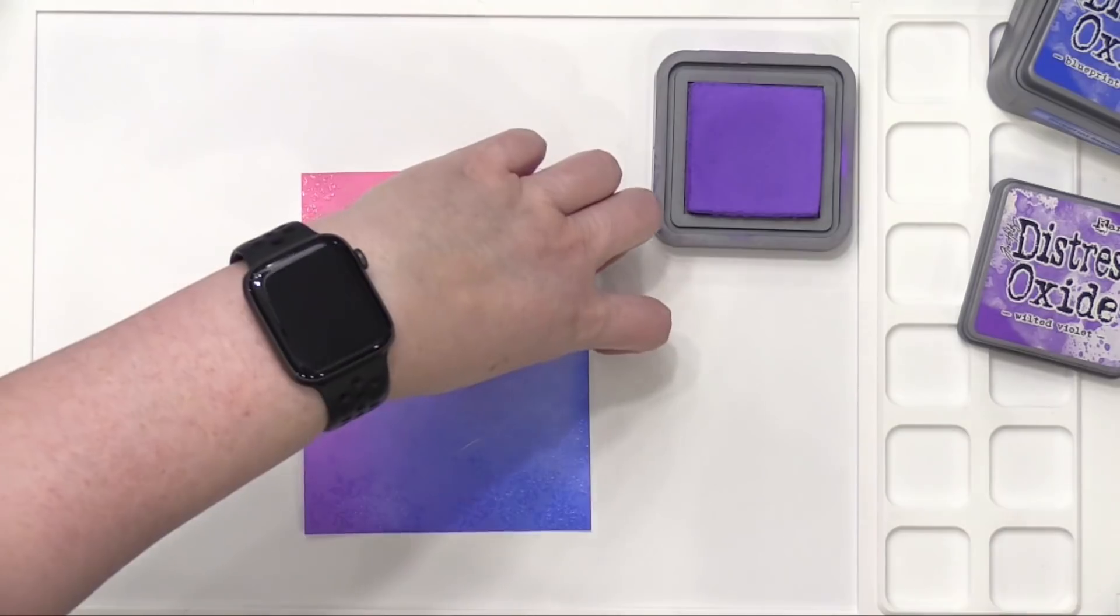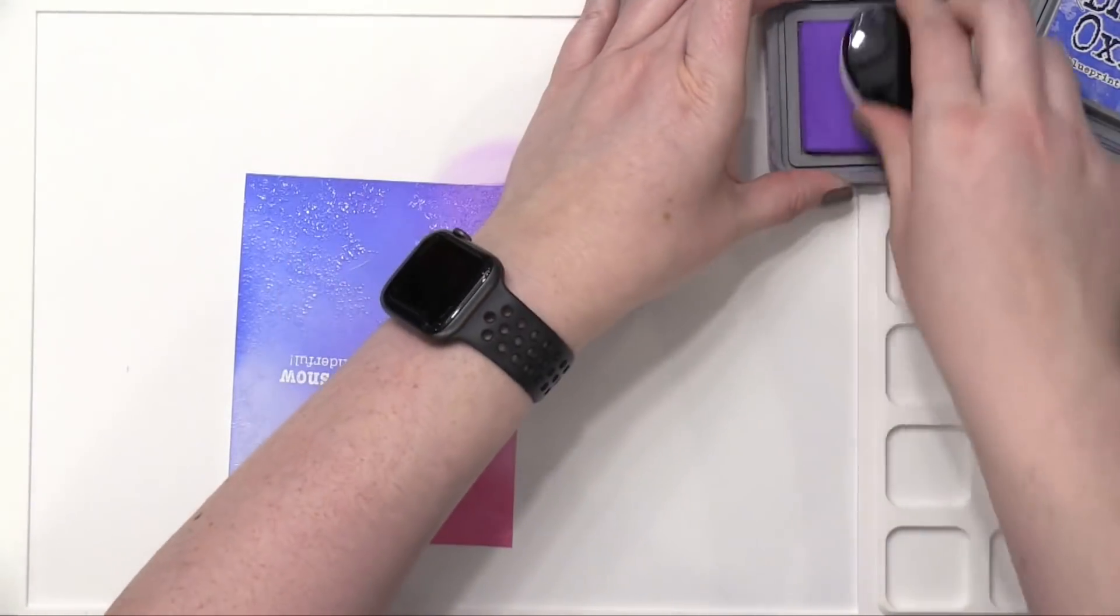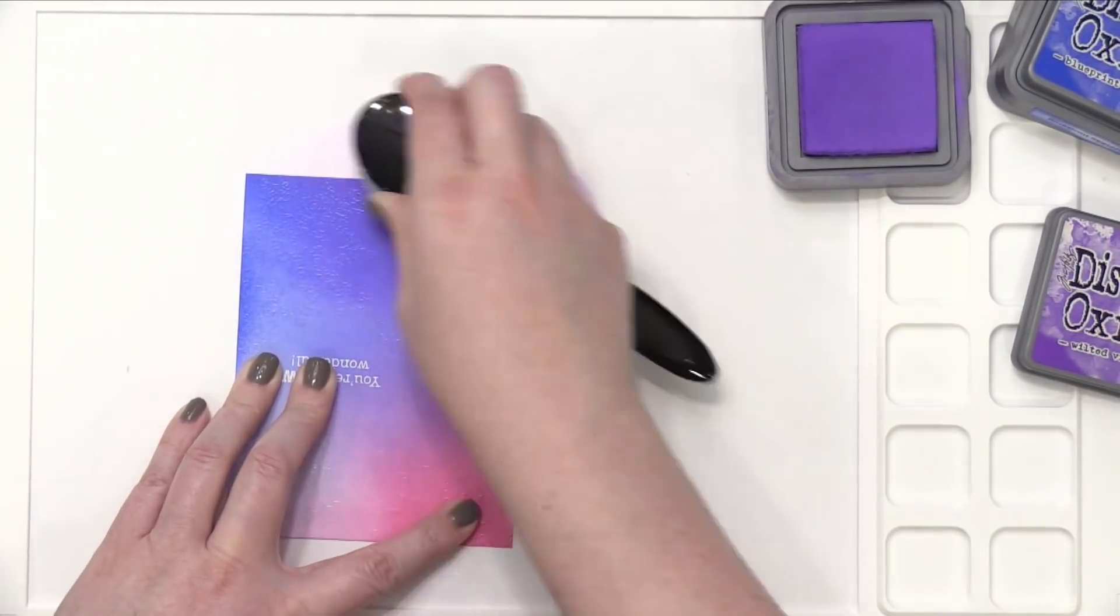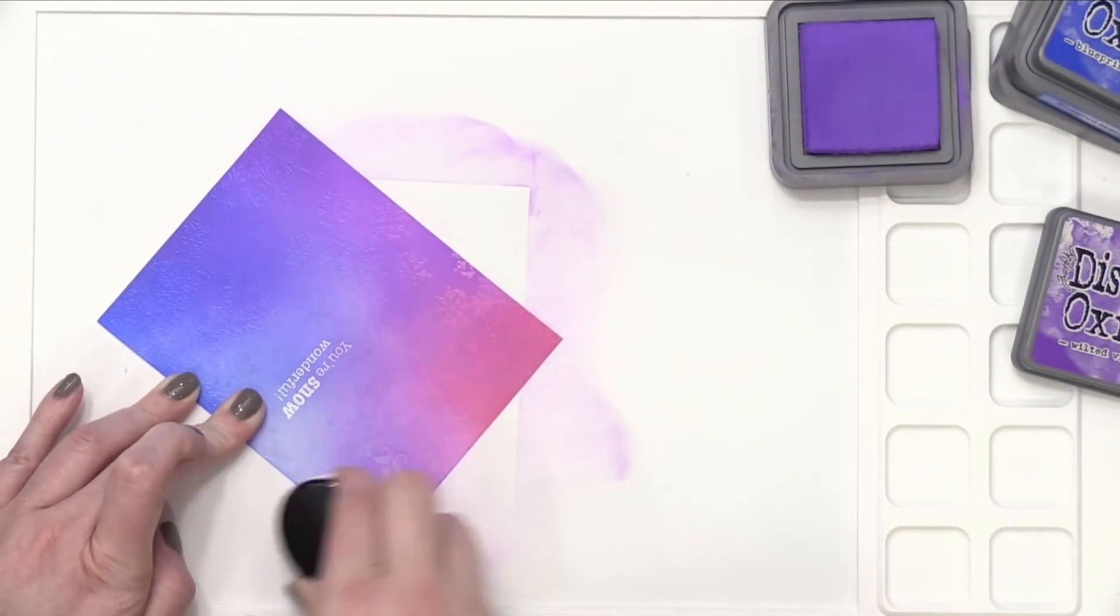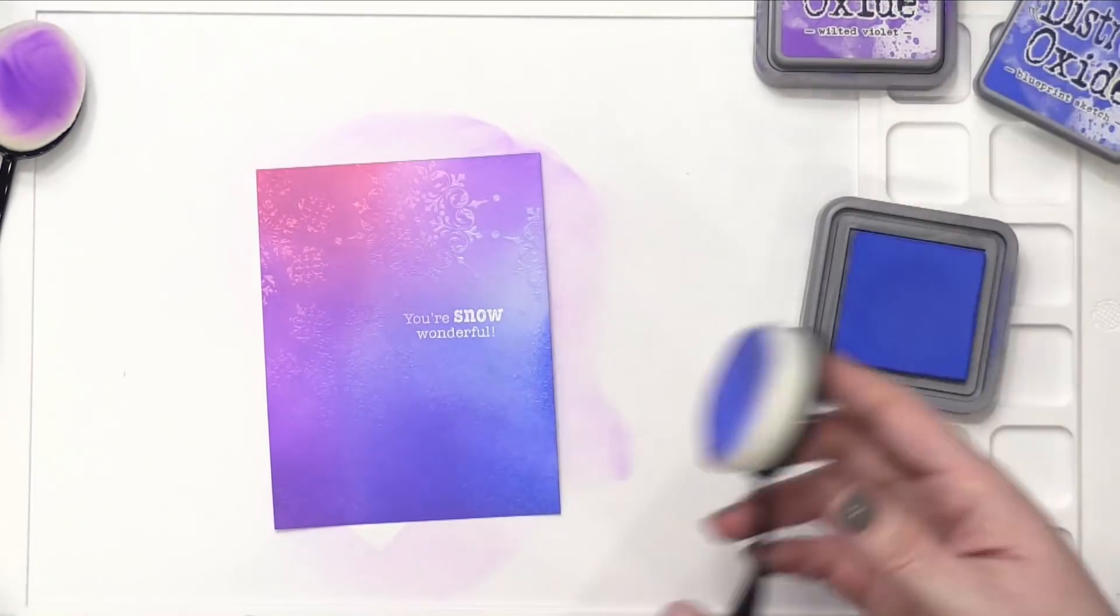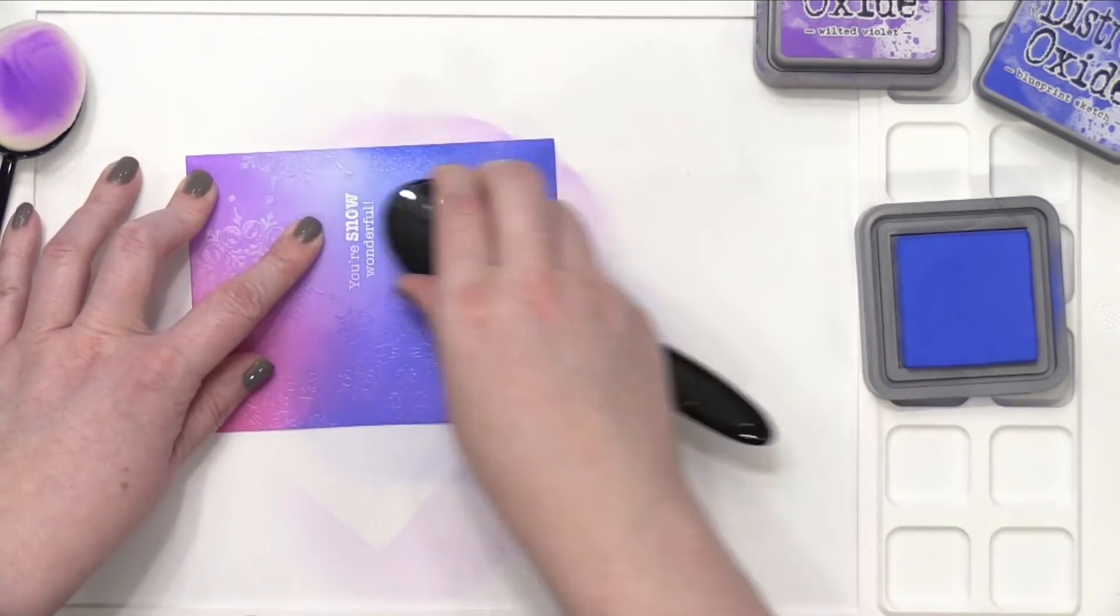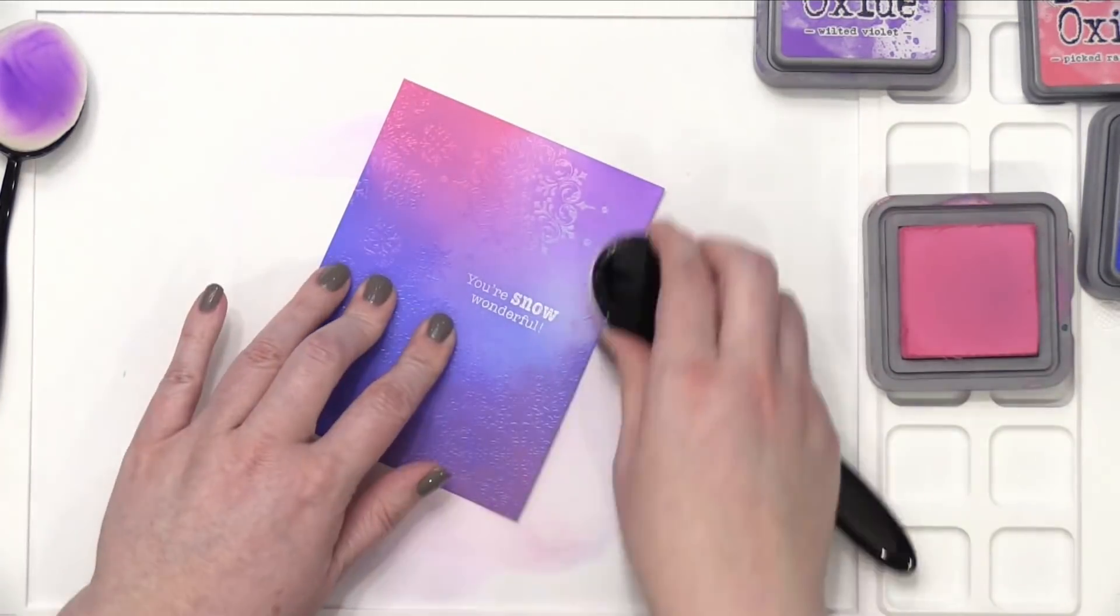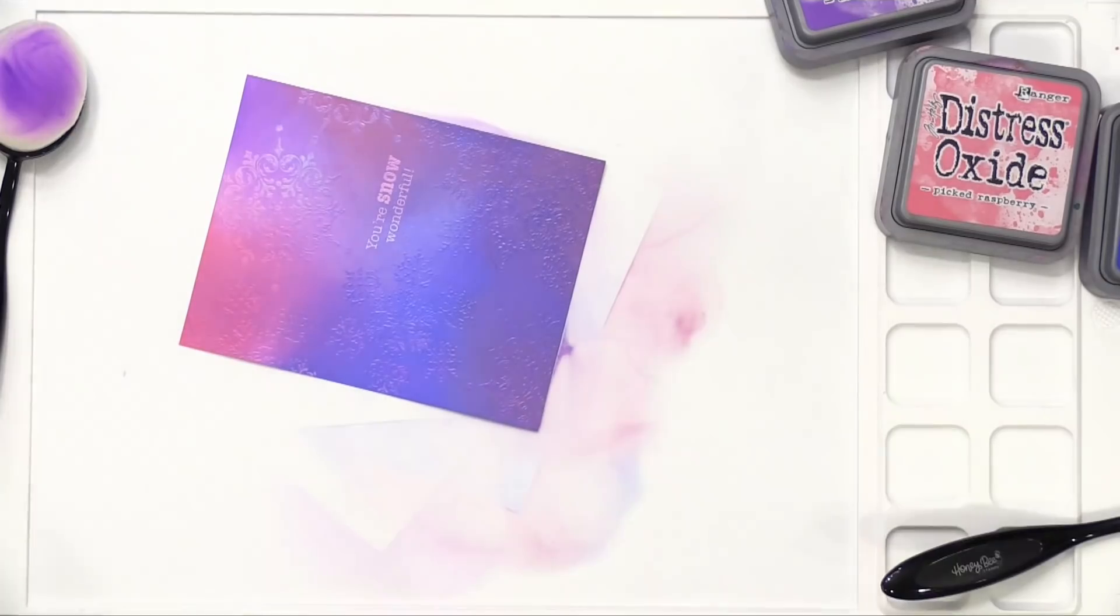So I'm going to take some oxide ink, this is Wilted Violet, and I'm going to kind of go over the areas that didn't have purple before because I want the color underneath to show through the clear embossing powder. It's not going to look like much right now because I haven't buffed it off the embossed areas but I did want to show you exactly how I applied it to all these different areas. I swapped up the ink colors a few times. I added quite a bit of blue near the bottom and at one point I decided it was too much blue. Added some more pink down in the corners, turned it a little bit more of a purple shade.